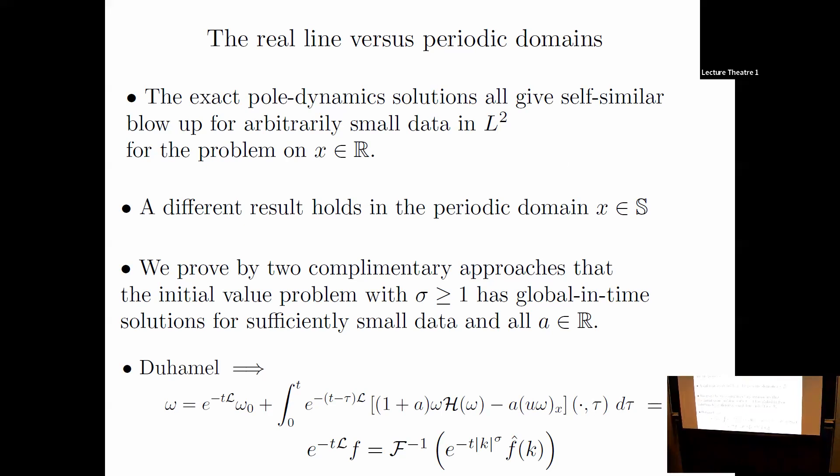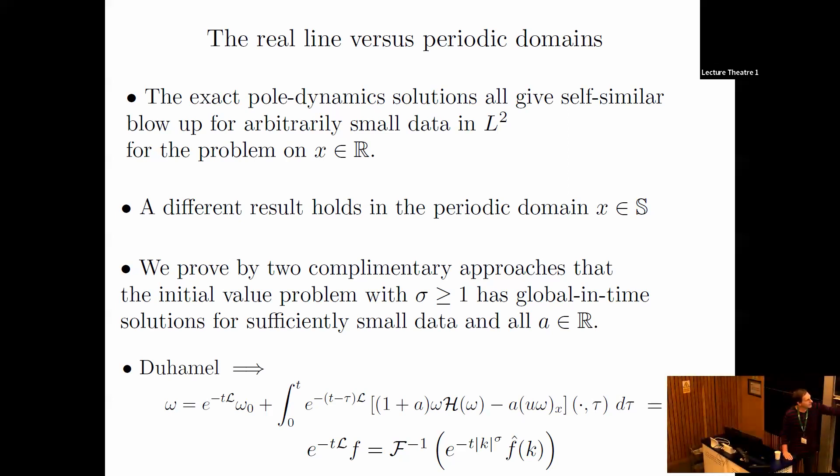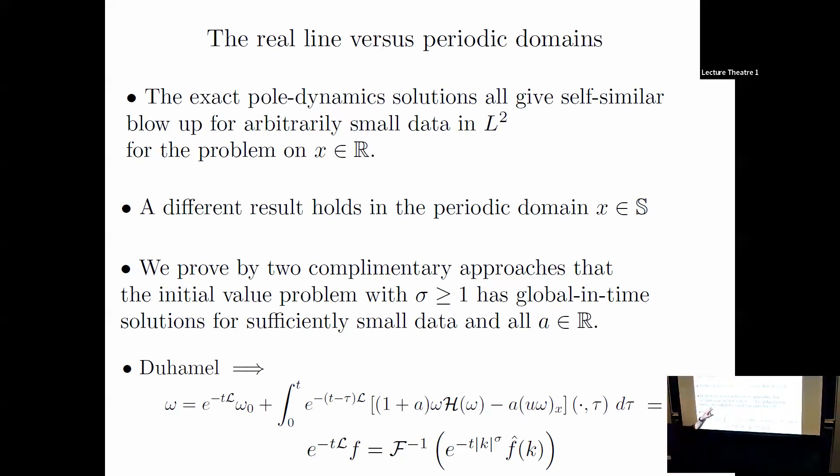A different result holds on the periodic domain. This motivated David Ambrose and me to try to prove global existence for a equals one, which is a famous open problem—many well-known analysts have worked on it and it's still open. We couldn't get that either. So we turned directions. We looked at what happens in the periodic domain. We proved by two complementary approaches that in the periodic domain with enough dissipation, there are global-in-time solutions for small data. What I like best is it's a whole line in the A-sigma parameter space.